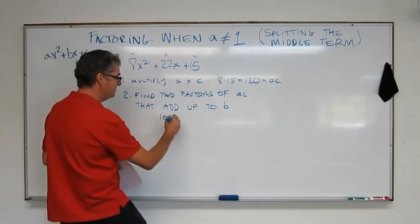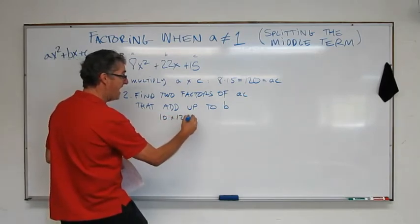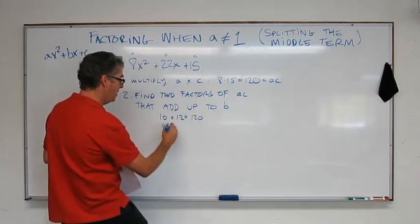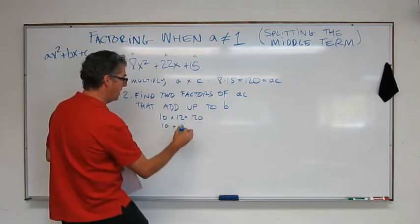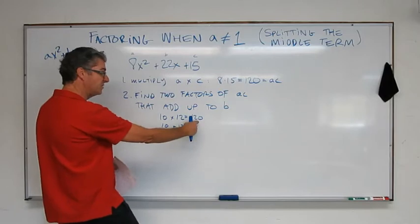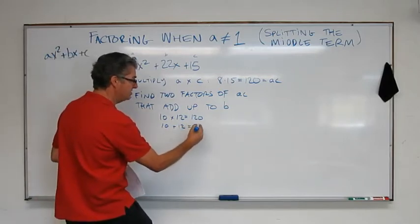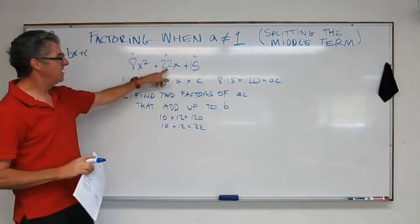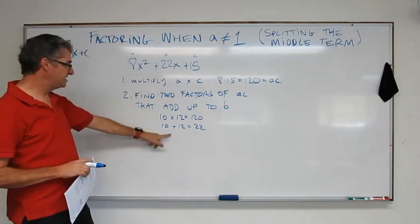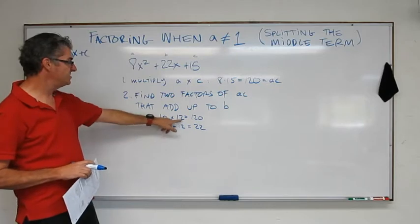10 times 12, 10 times 12, that adds up to 120, and 10 plus 12, I'm sorry, 10 times 12 multiplies to 120, but 10 plus 12 adds up to 22, which is indeed our b term. Okay, so we did this step. We found those two factors, 10 and 12.